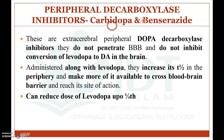The advantages of peripheral decarboxylase inhibitors: when administered along with levodopa, they increase the half-life of levodopa in the periphery, make more levodopa available to cross the blood-brain barrier to reach its site of action, and allow the dose of levodopa to be reduced to one-fourth of the dose required when levodopa is used alone.